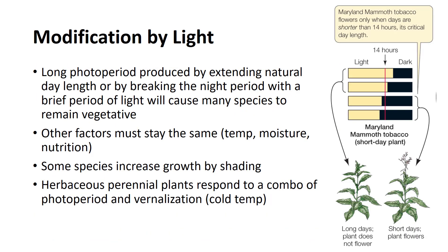Light intensity and photoperiod can modify the juvenile shoot growth and development of seedlings of many woody species. Long photoperiods produced by extending the natural day length to approximately 16 hours with supplementary low-intensity light, or by breaking the night period with a brief period of light, will cause many species of plants to remain vegetative.